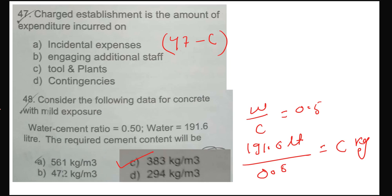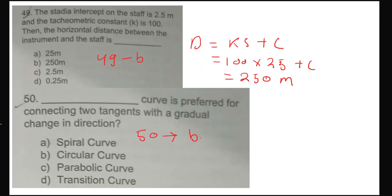So the cement content is 383 kg per meter cube of concrete. Confirming: question 48 is option C, question 47 is option C. Now question 49 — the tachyometer distance formula. It was clearly explained in the survey section. The formula is D = ks + c, and the answer for 49 is option B.